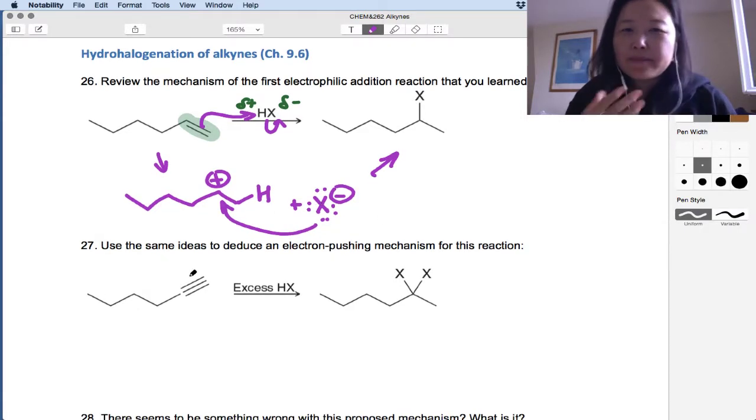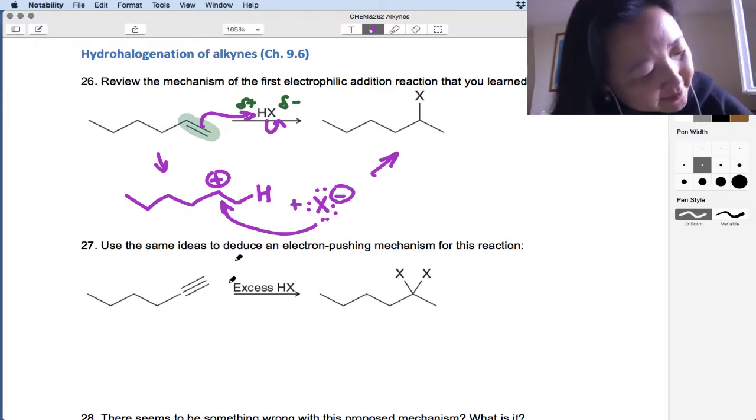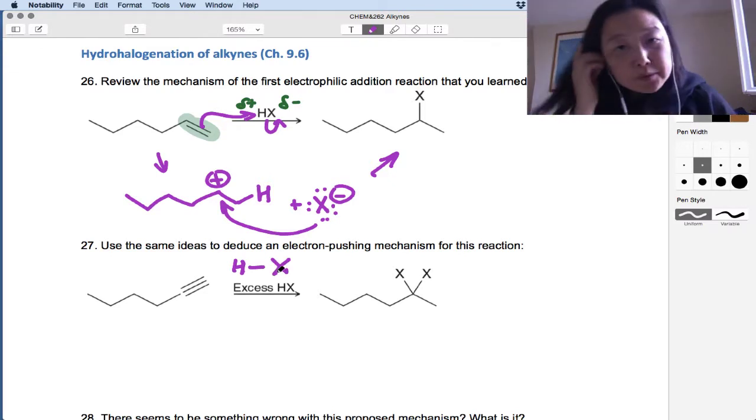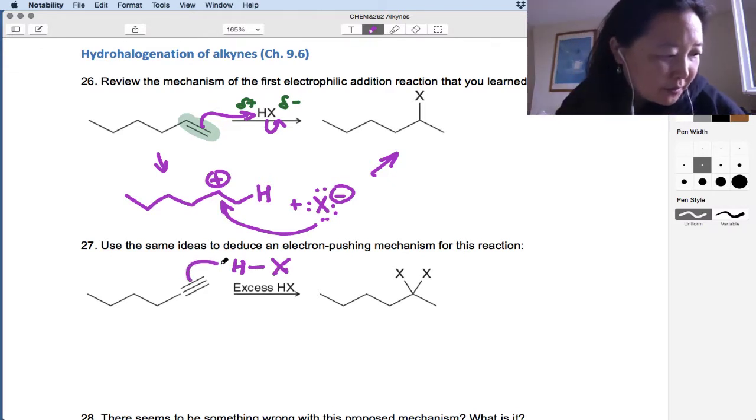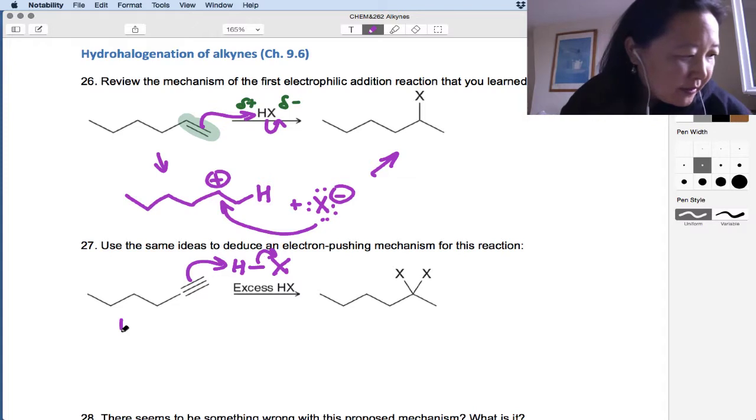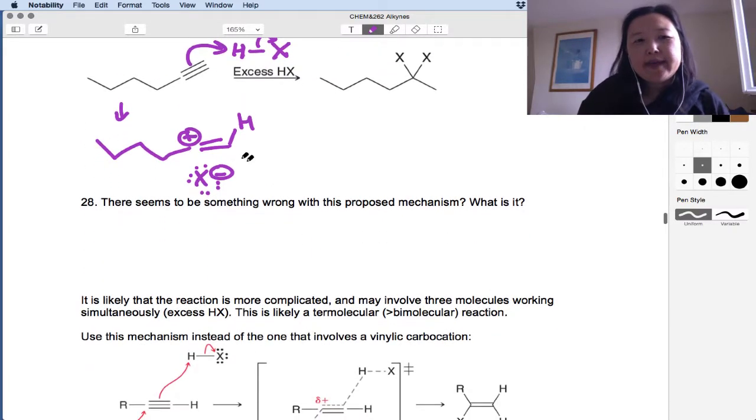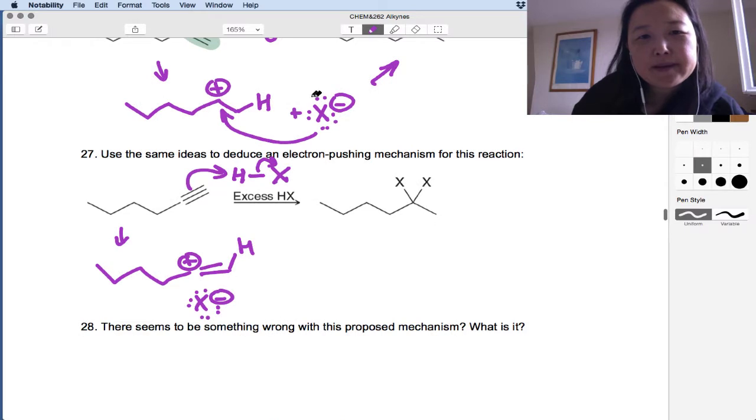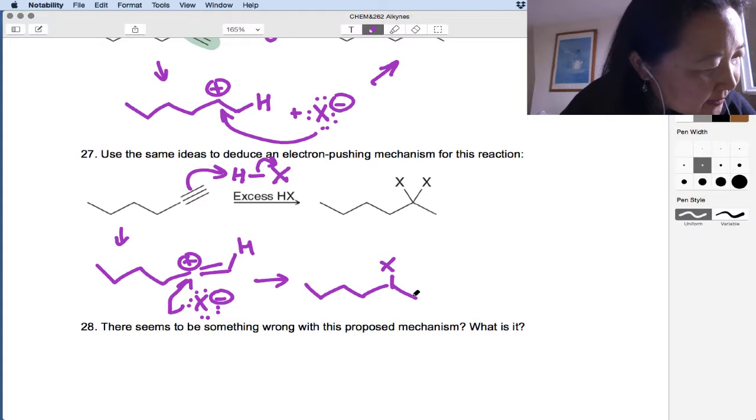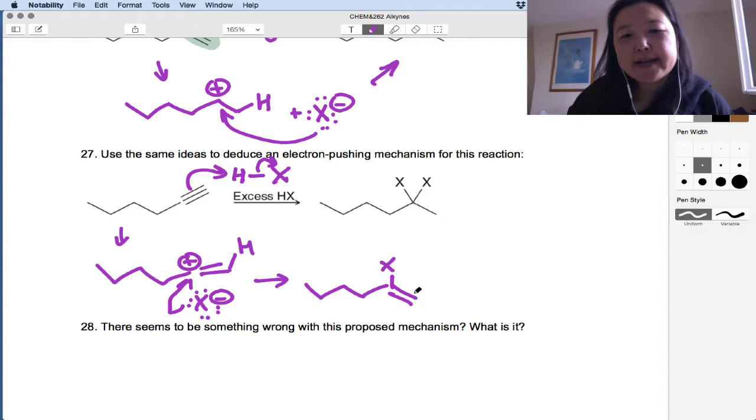Now if we do the same thing but with a triple bond, can we just do the same thing twice since there's two pi bonds instead of one? Well, let's take a look. Obviously we're going to need excess HX or two equivalents of HX because we have two pi bonds. So we do this the first time and you get what you would expect here. Okay, so our first intermediate has a pi bond. And then we want to, just like up here, attack that positive charge. And because this is planar, it can attack from either side. And we get this halogenated alkene.